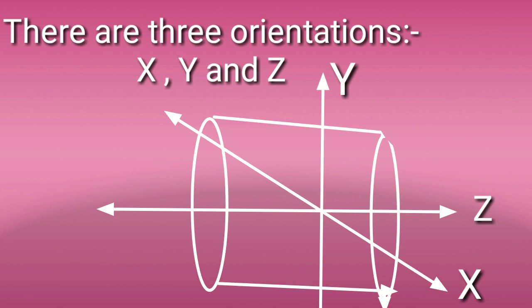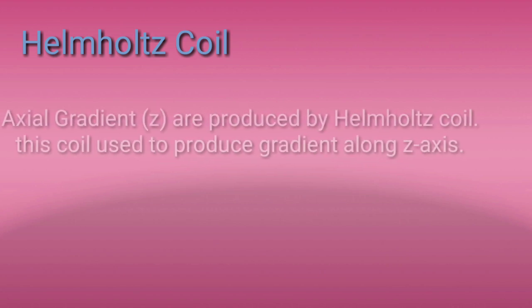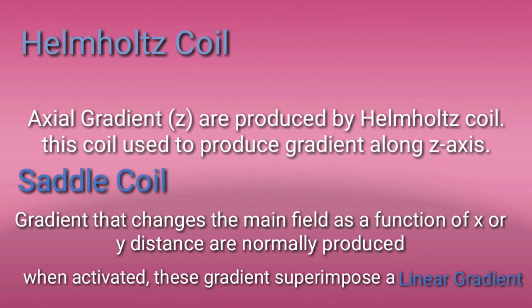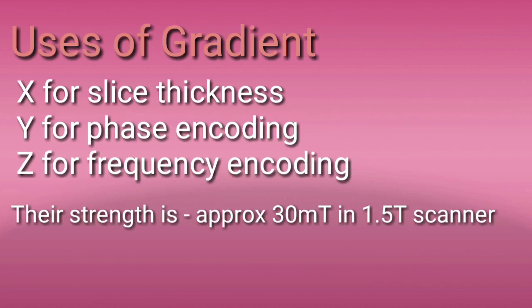In the X-direction, a saddle coil is used. The saddle coil produces a magnetic field in the X or Y direction and superimposes a linear gradient. The uses of the gradient are: X-direction for slice thickness, Y for phase encoding, and Z for frequency encoding.